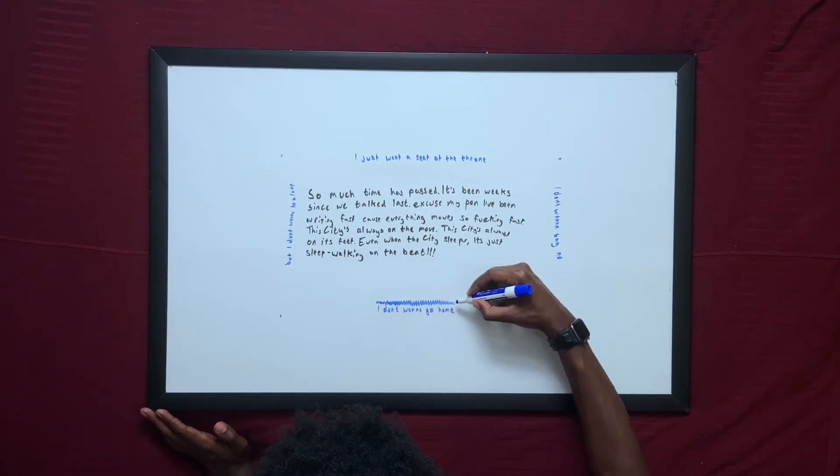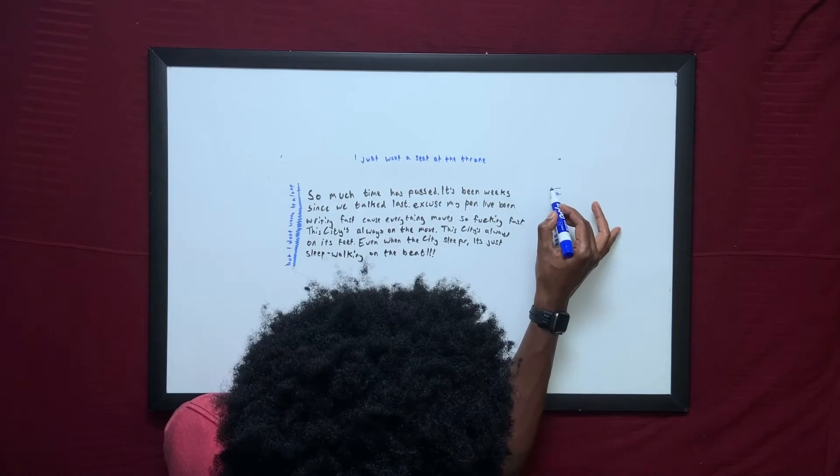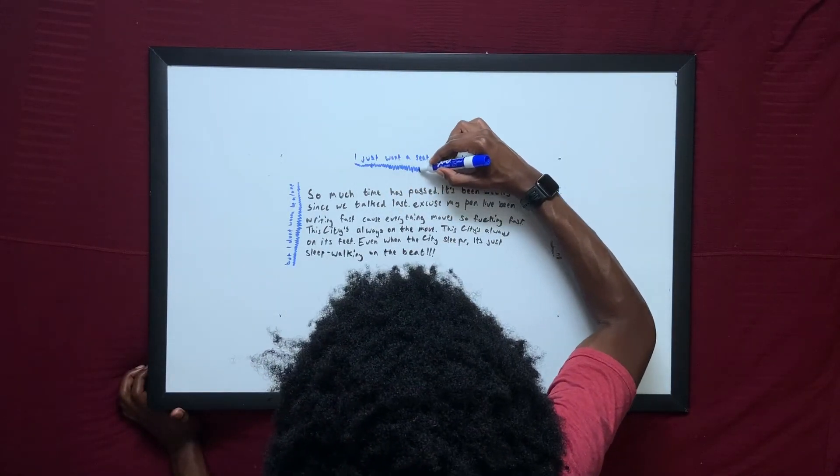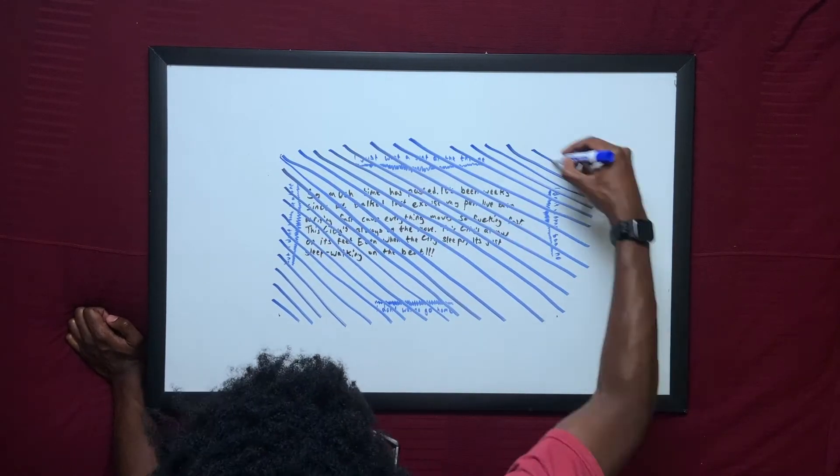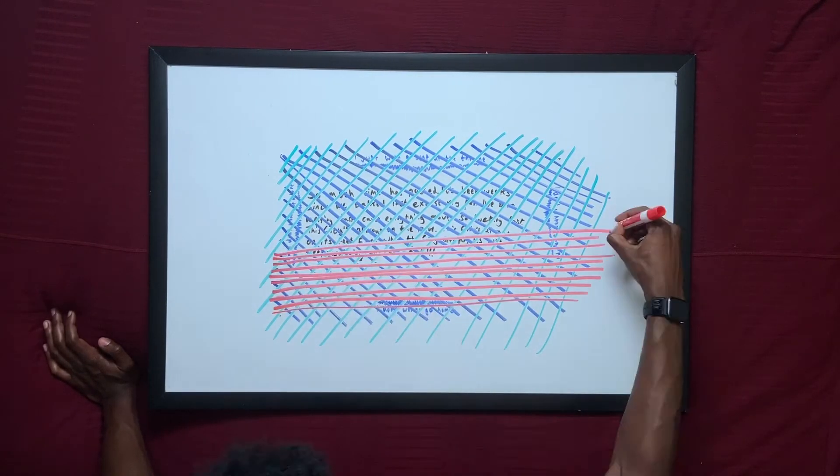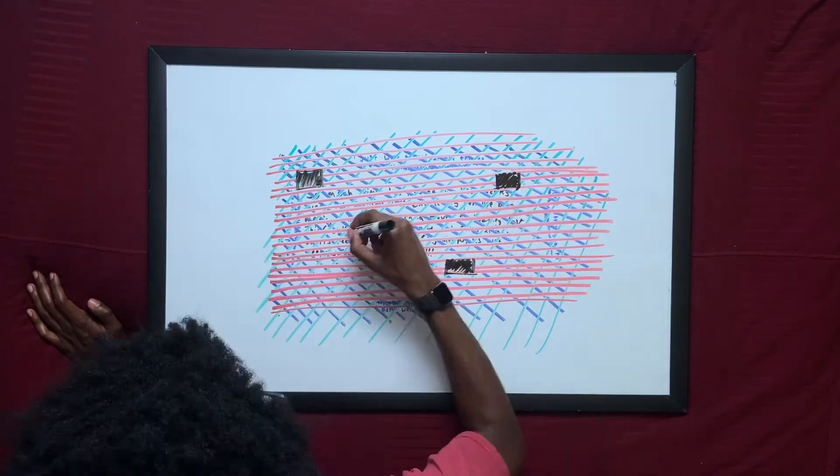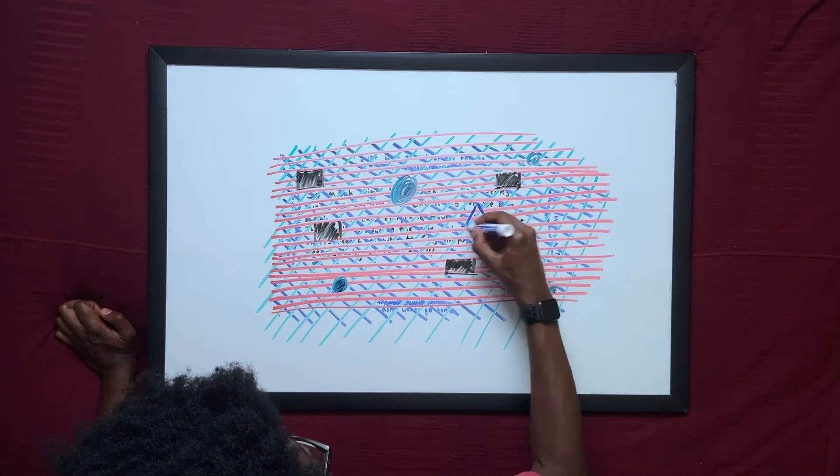I don't wanna go home, but I don't wanna go home. I don't wanna be alone, I just wanna sit at the throne. I don't wanna go home, I don't wanna go home, I just wanna sit at the throne.